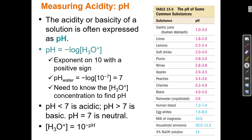If the H3O+ concentration becomes greater than the OH- concentration — they're not both equal to 10 to the minus 7 anymore — then that's an acidic solution. Acidic solutions have a pH less than 7, and basic solutions have a pH greater than 7. I can calculate the pH if I know the H3O+ concentration, and I can calculate H3O+ concentration if I know the pH: H3O+ equals 10 to the negative pH power.